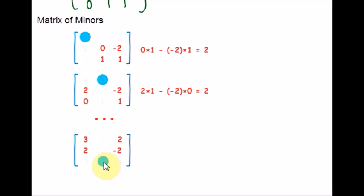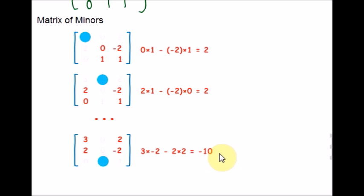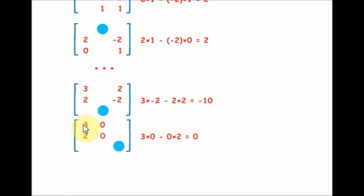For each position, ignore the corresponding column and row and consider only the other numbers. Multiply in a cross way and place a negative sign in between. For example: 3 times negative 2 minus 2 times 2 gives negative 10. For the last number, ignore that column and last row: 3 times 0 is 0, minus 2 times 0 is again 0, so the result is 0.